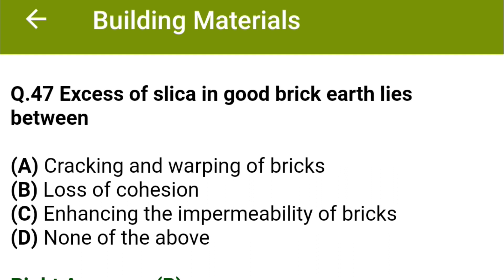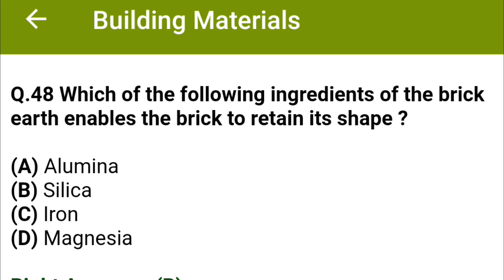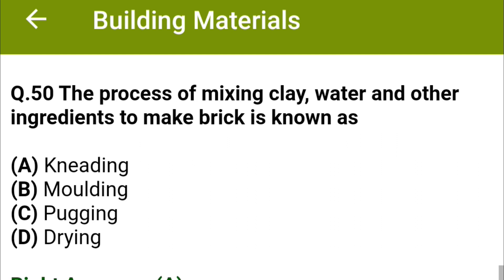The correct answer is option B: loss of cohesion. Which of the following ingredients of brick earth enables the brick to retain its shape? Option A alumina, option B silica, option C iron, option D magnesia. The correct answer is option B: silica.